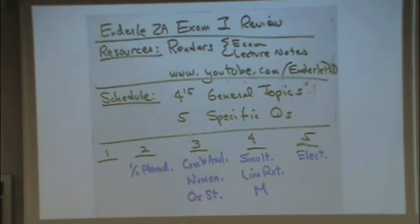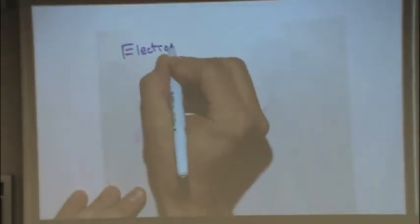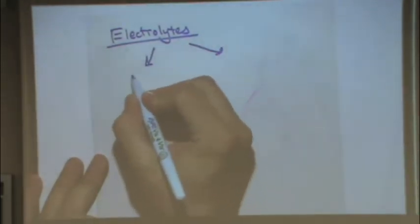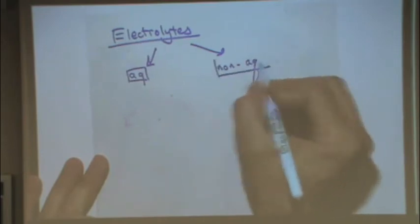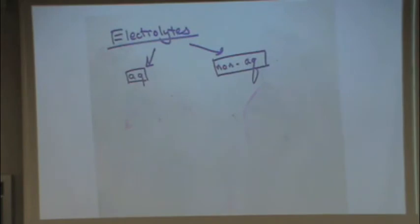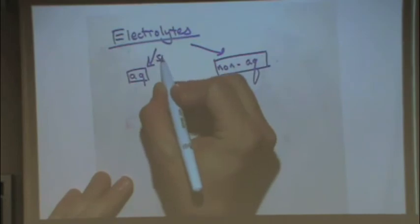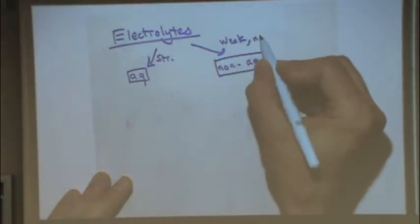Electrolytes. A good electrolyte is something that will ionize in solution, allowing for good conductivity — a conductor of electricity. A weak or non-electrolyte is not ionized and does not allow good conductivity. This splits into two categories. Generally, something that's aqueous — dissolved in water — is a good electrolyte. Something that's non-aqueous is generally not an electrolyte. The strong category on the left, weak or non-electrolytes on the right.